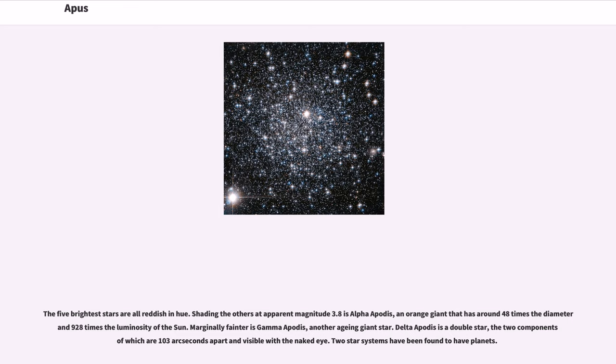Marginally fainter is Gamma Apodis, another aging giant star. Delta Apodis is a double star, the two components of which are 103 arcseconds apart and visible with the naked eye. Two star systems have been found to have planets.